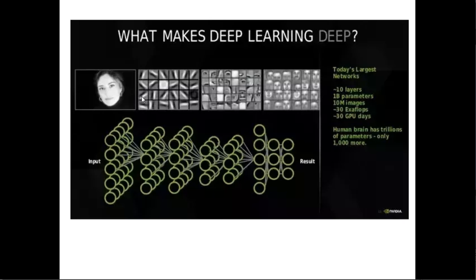For example, there are 10 layers and one billion parameters to train, which is not possible manually. There were 10 million images and one billion parameters to be trained, and using a GPU it took 30 days to train this data. So you can imagine that you cannot do the training of one billion parameters with manual machine learning. That's why deep learning is an important field, especially for face recognition, voice recognition, natural language processing, robotics, and other areas where you need to automate things.